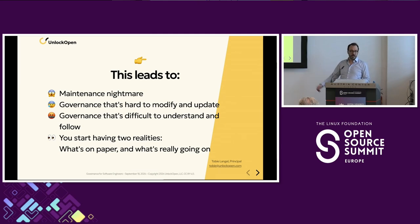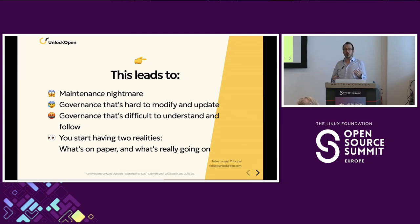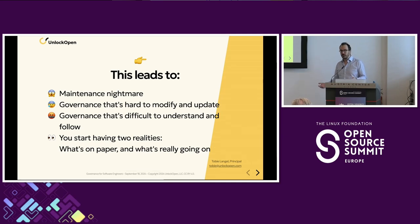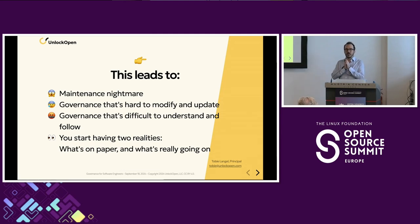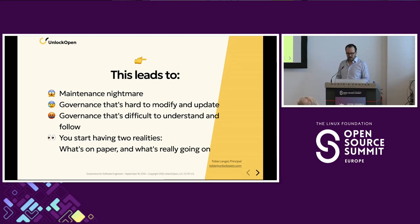This leads to a maintenance nightmare — hard to modify and update, the exact same thing you see in code. Difficult to understand the governance and navigate: where do I have to look for what? The real big risk is you start to have two realities: the paper governance — what is supposed to happen — and then the common practices that everyone has been practicing. Those two things start to diverge, and that makes it actually even worse than not being explicit about things. You end up with one reality for the inside group and a paper reality for the outside group.